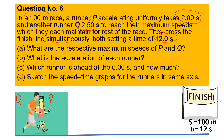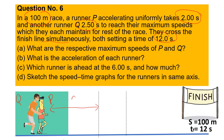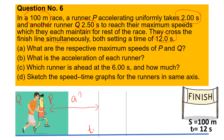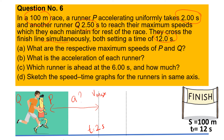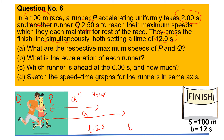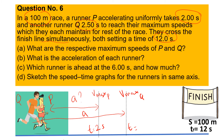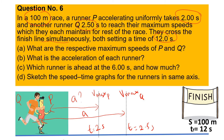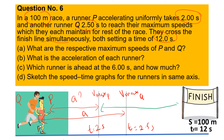For runner P, from the starting point, it has an unknown acceleration and the time taken to reach maximum speed is 2 seconds. For runner Q, from the starting point, the acceleration to reach v-max takes 2.5 seconds. After that, both runners maintain their speed until the finish point.